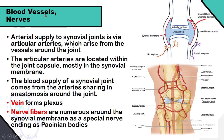Blood vessels and nerves: blood vessels provide blood supply and nerves provide nerve endings in the joints. Blood is supplied by articular arteries arising from large arteries near the joints, located within the joint capsule, mostly in the synovial membrane. The blood supply to synovial joints comes from arteries sharing in anastomosis — meaning cross-connections — around the joint. Nerves are supplied by branches of large nerves; for example, in the knee joint, by branches of the femoral, sciatic, and obturator nerves. Nerves are numerous around the synovial membrane as special nerve endings called Pacinian bodies.